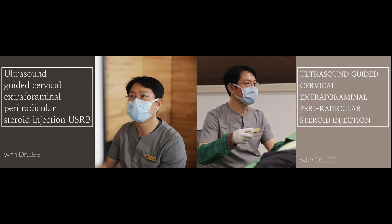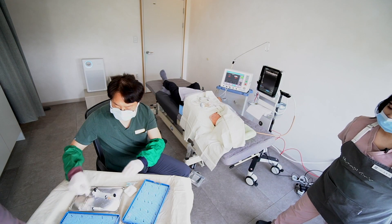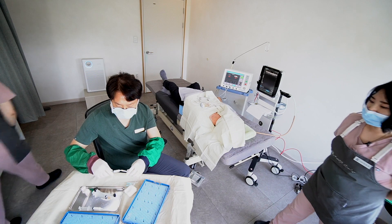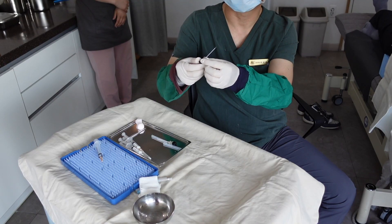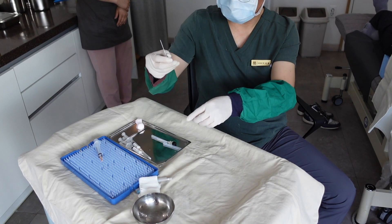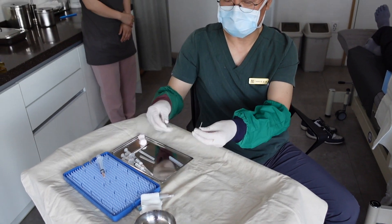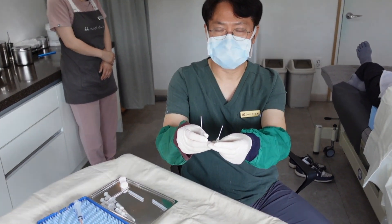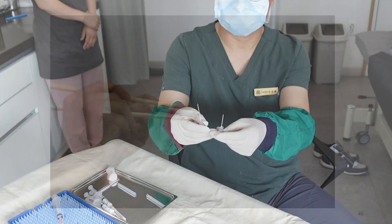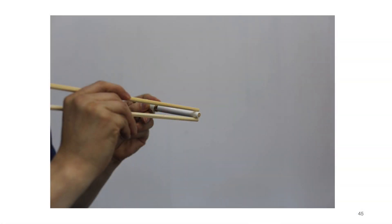If you did not watch these videos, please review them. It is an insulated 22 gauge RF cannula. I am going to put these two needles side by side, like this. I will squeeze the nerve root by two electrodes.